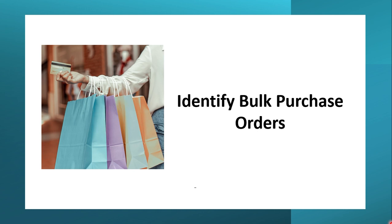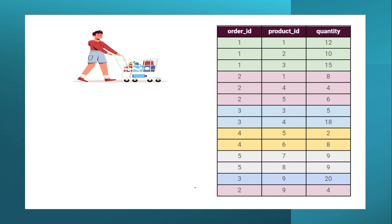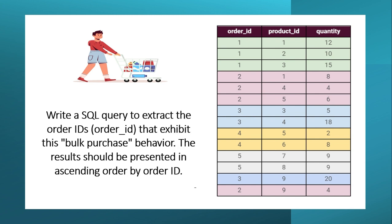In this video we are going to talk about a very interesting SQL problem in which we will be identifying bulk purchase orders. Imagine that you are working in an e-commerce industry and you have been given details of orders: the order ID, the product ID, and their respective quantities. You are asked to write a SQL query to extract the order IDs that exhibit bulk purchase behavior, with the result presented in ascending order by order ID.